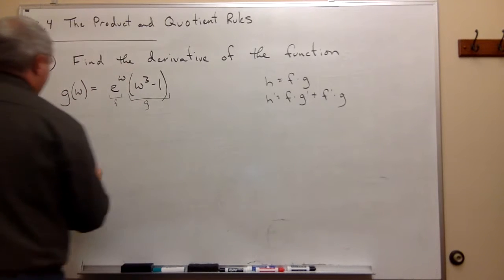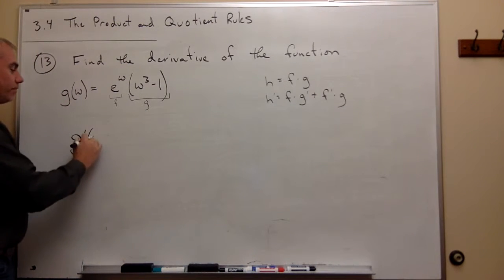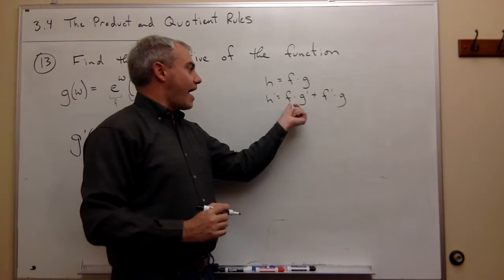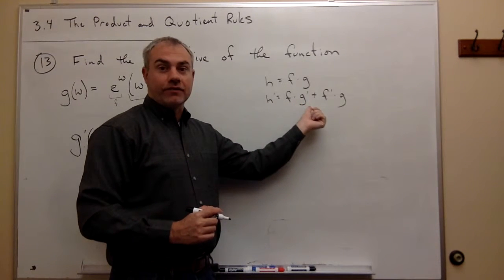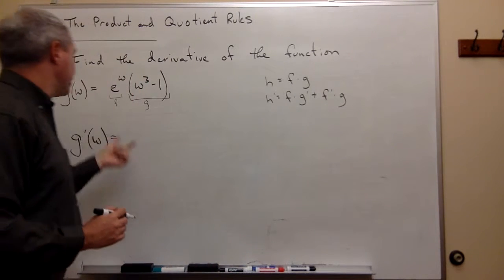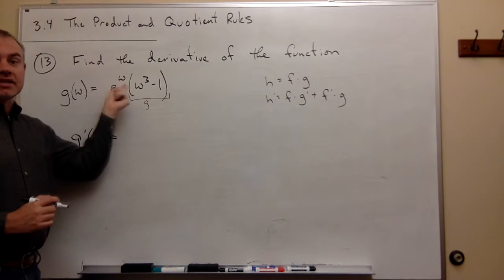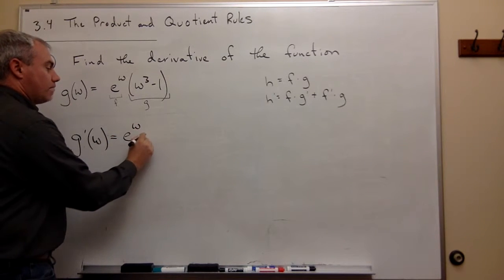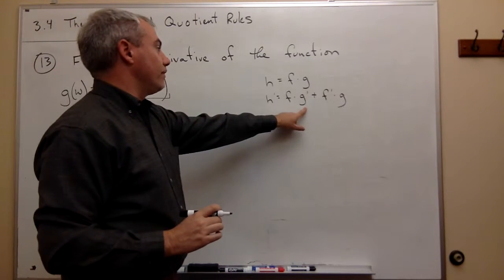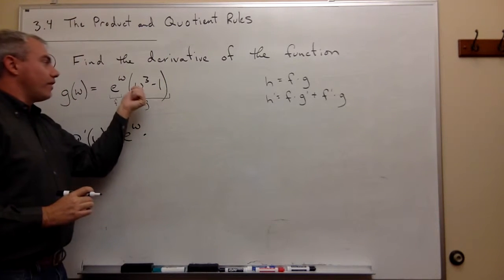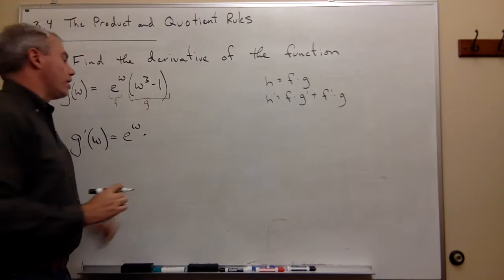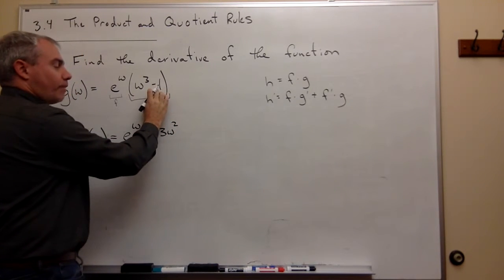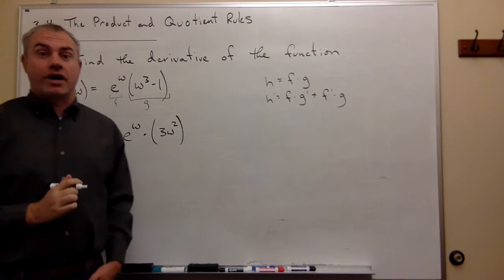So if I take the derivative here, I get that g prime of w is equal to, first of all, it's f left alone times the derivative of g. So f left alone, f is e to the w. So we've got e to the w times, that's f, times the derivative of g. Well, the derivative of w cubed minus 1 is 3w squared, and the derivative of minus 1 is 0. So it's just 3w squared.